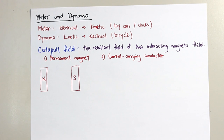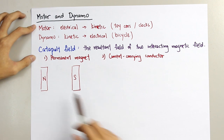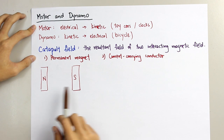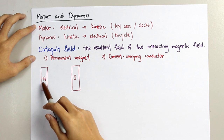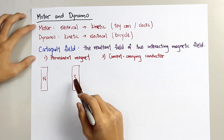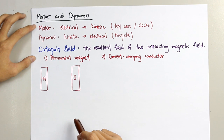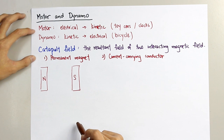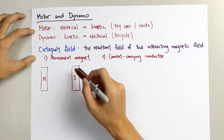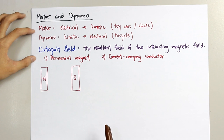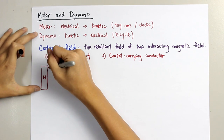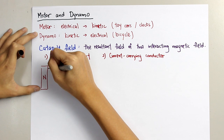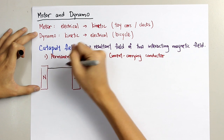In this diagram, we can see two permanent magnets — one which is a north pole, and another one which is a south pole. So when two permanent magnets like this exist, the magnetic field lines will look like this.